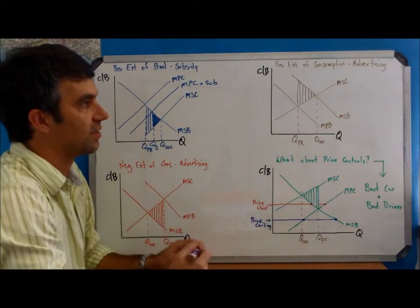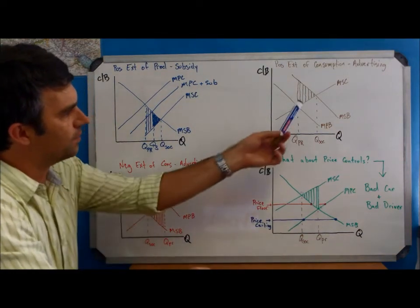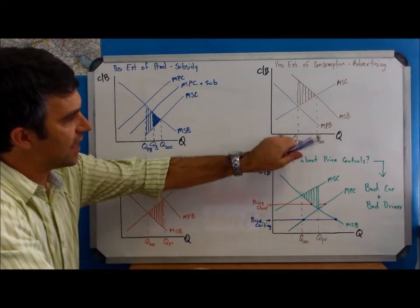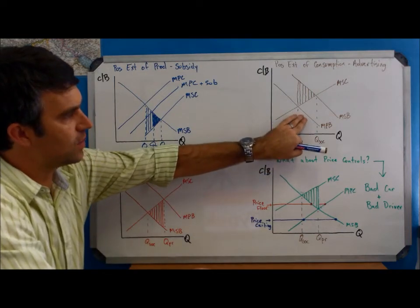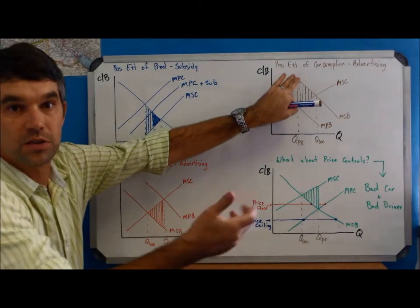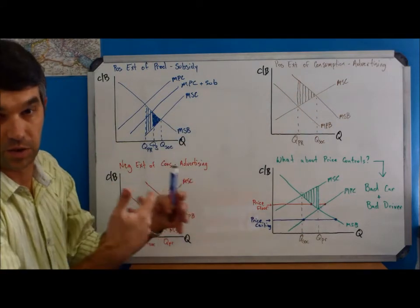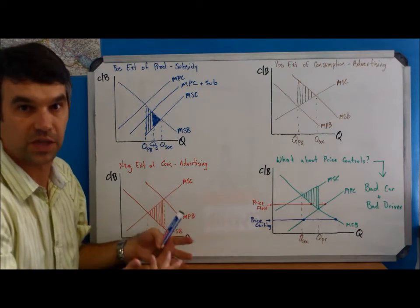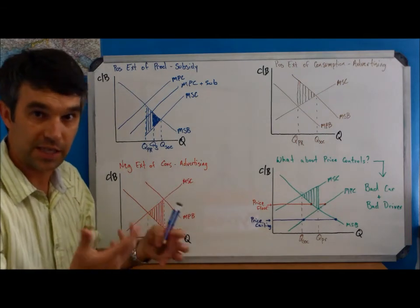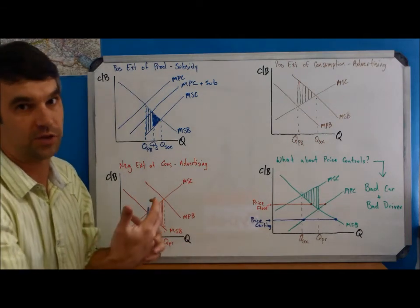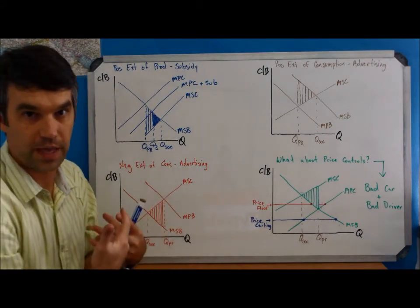If we look at a positive externality of consumption, what we can see again is that the private party is consuming something that is having spillover benefits to a third party. Typically here we talk about a flu vaccine or any kind of vaccine, medicine, something like that. I take the medicine, it's a benefit to me, but it's also a benefit to you because you don't get sick from me.